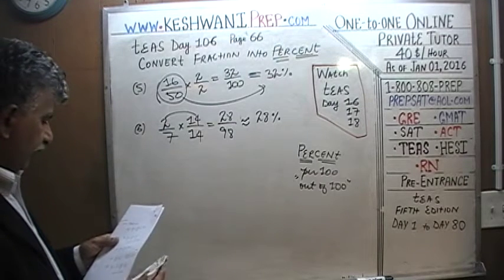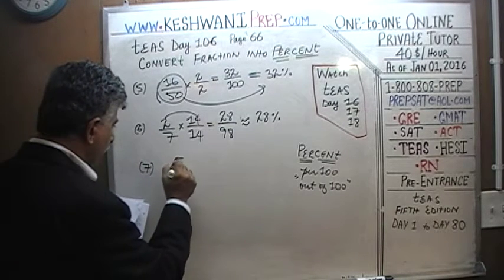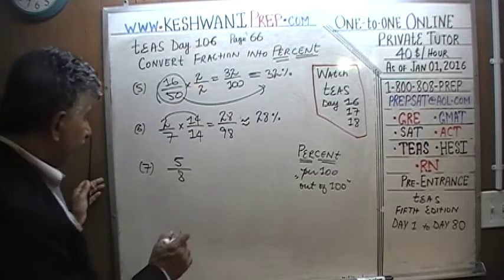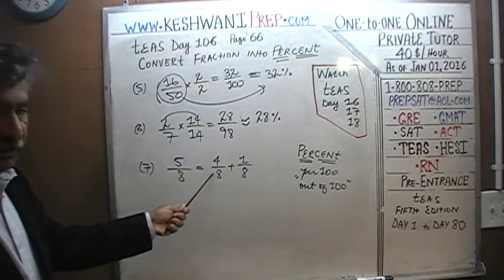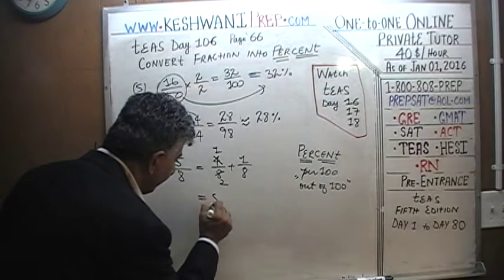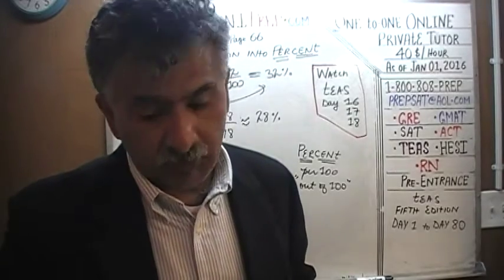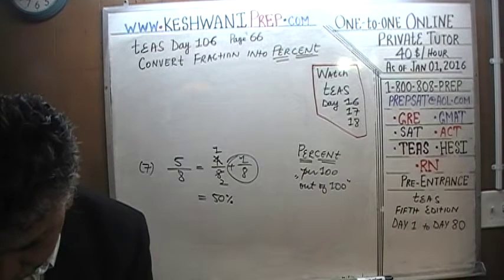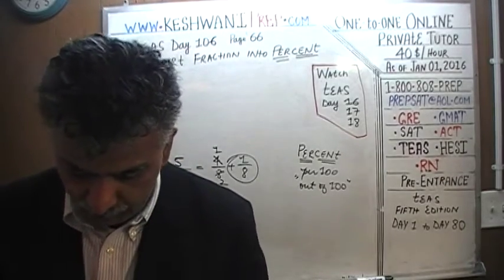Number seven: five-eighths. Five-eighths is the same as four-eighths plus one-eighth. Four-eighths reduces to one-half — four out of eight is half, which we know is fifty percent. But how much is one-eighth in percentage? You should know your eighths, quarters, fifths, and tenths by heart. If you don't, it's about time you learn them. Let's find out what one-eighth is.